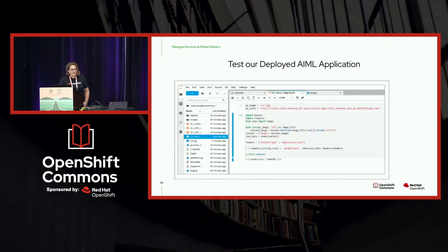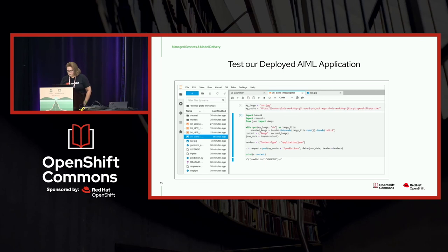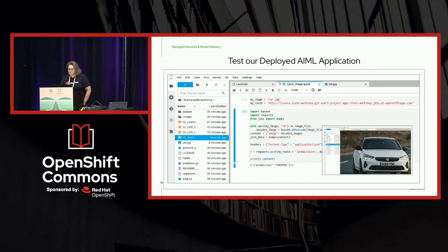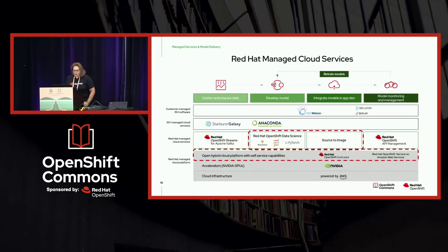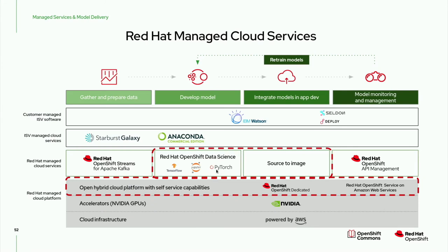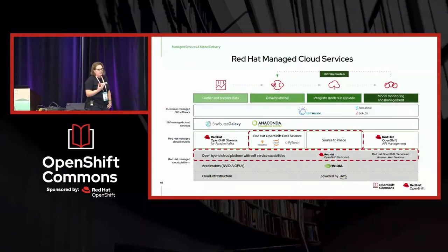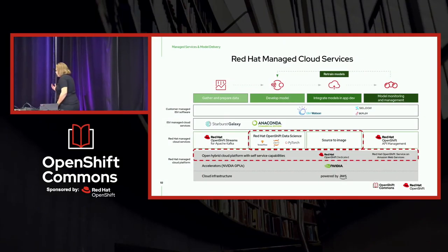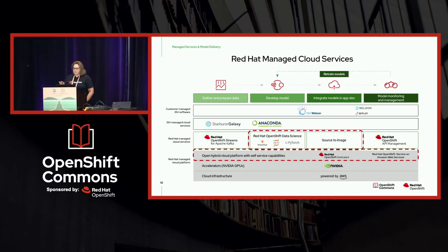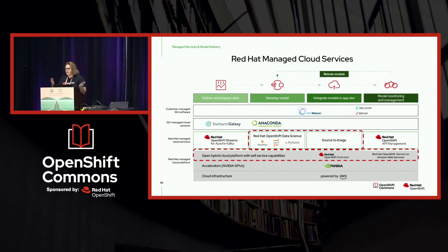To test the deployed AI/ML application, we take that route back into a Jupyter notebook, enter the actual API address, and give it an image — in this case car.jpg — to see if it can pull the license plate number from that image. And it actually worked: we have a car and we were able to successfully predict the actual license plate number. All of this runs on Red Hat managed cloud services, with this demo concentrating on the Red Hat OpenShift data science portion. The goal is a fairly open platform where you can use specific open source vendors or mix Red Hat products with open source products.